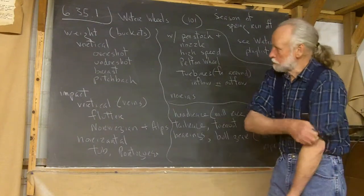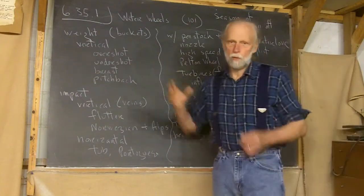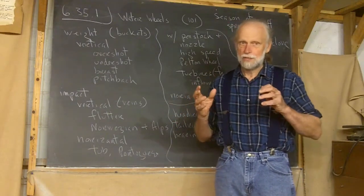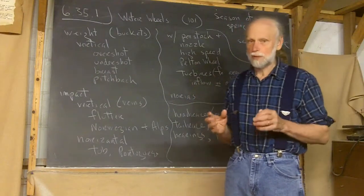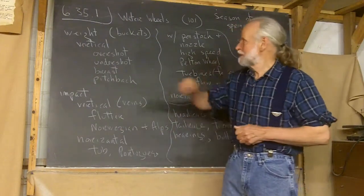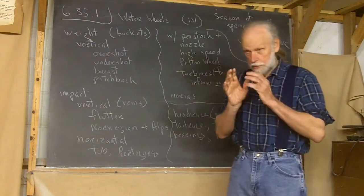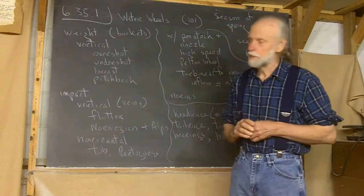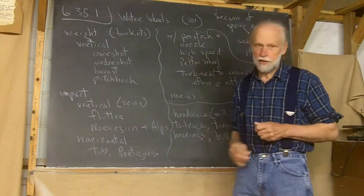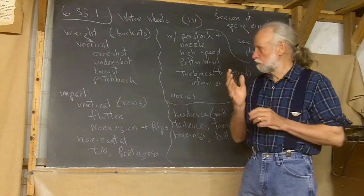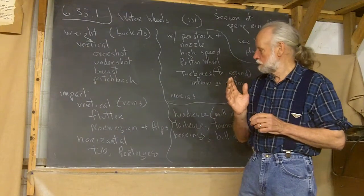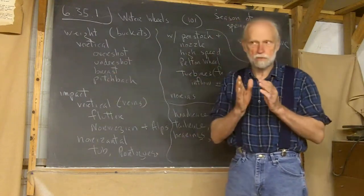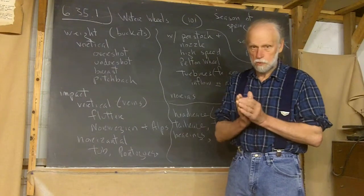All right, waterwheels. Now, different kinds of waterwheels. If you deal with them by weight, the weight of the water, weight is always there. It's what makes water power possible. But when it's weight on the wheel, then the term for the part of the wheel that holds the water, those are called buckets. When it's impact, they're called veins.